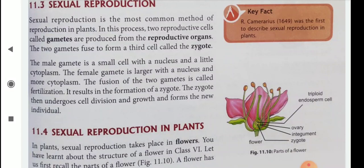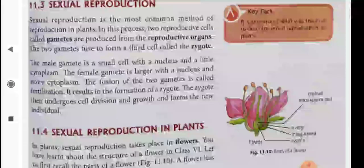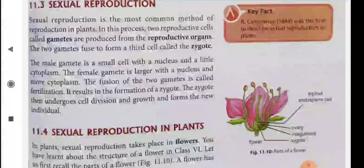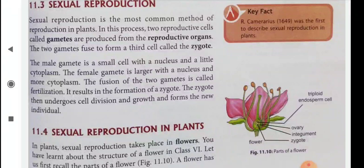The fusion of the two gametes is called fertilization. It results in the formation of a zygote. The zygote then undergoes cell division and growth and forms the new individual.